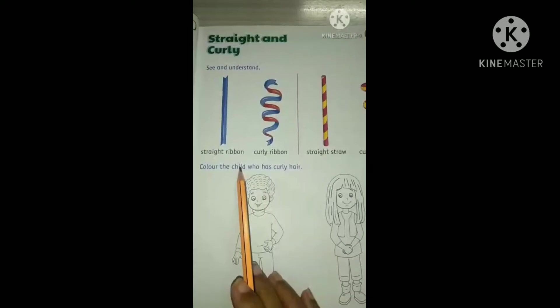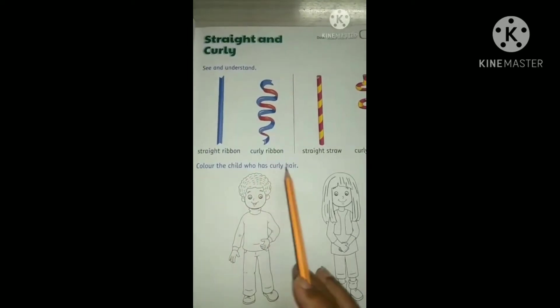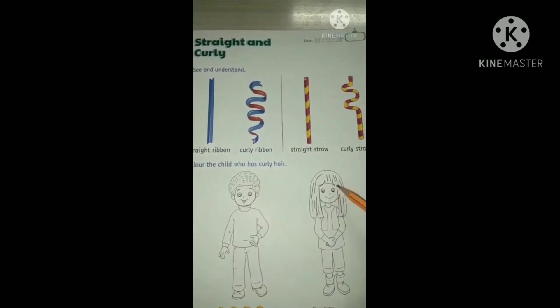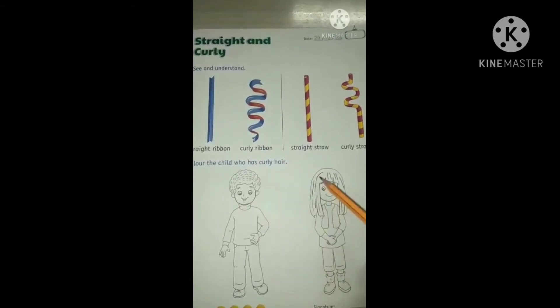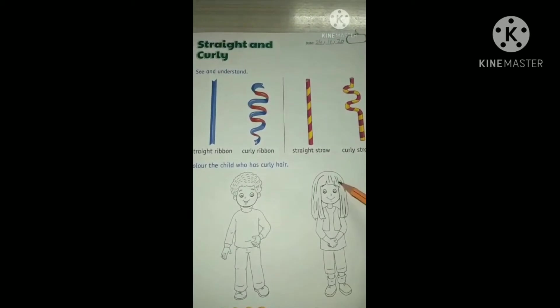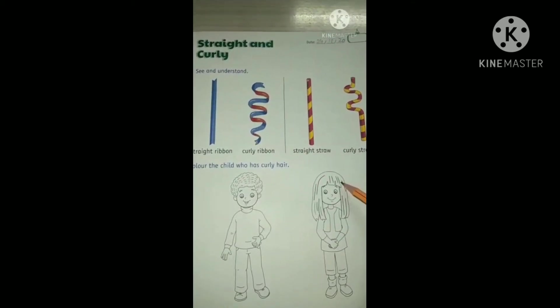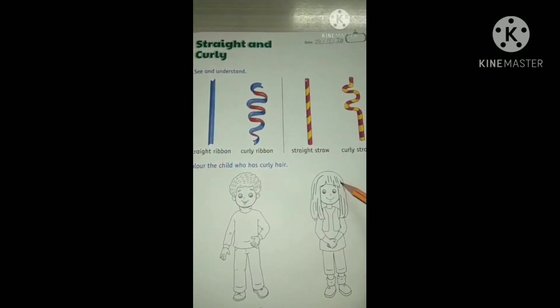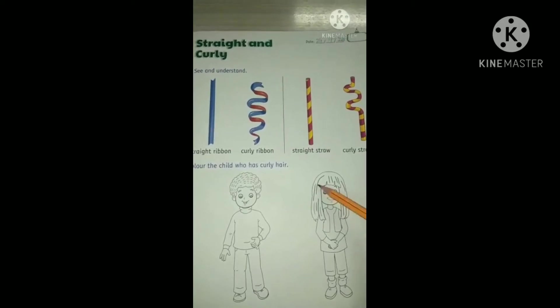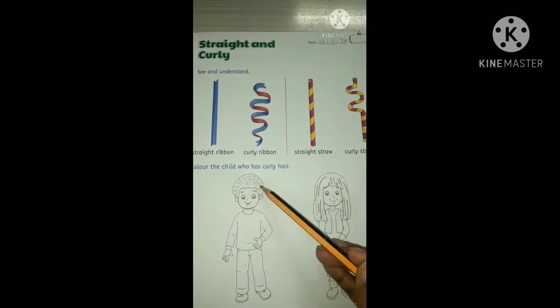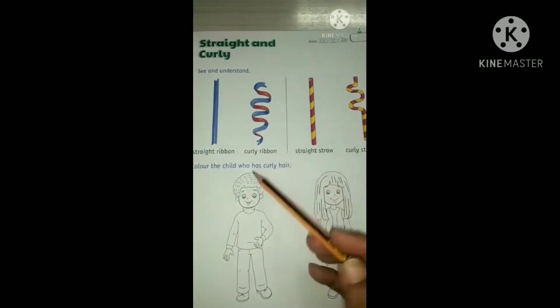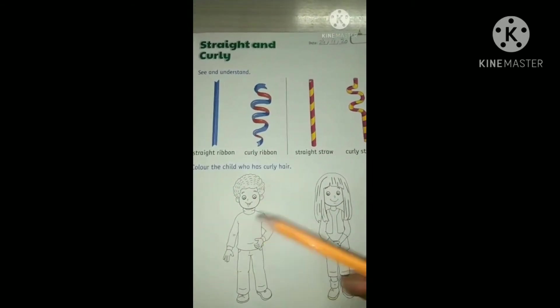Color the child who has curly hair. Now, you tell me which child has curly hair. The girl? No. See, this girl has straight hair. This boy has curly hair. So what will we do? We will color this boy only.